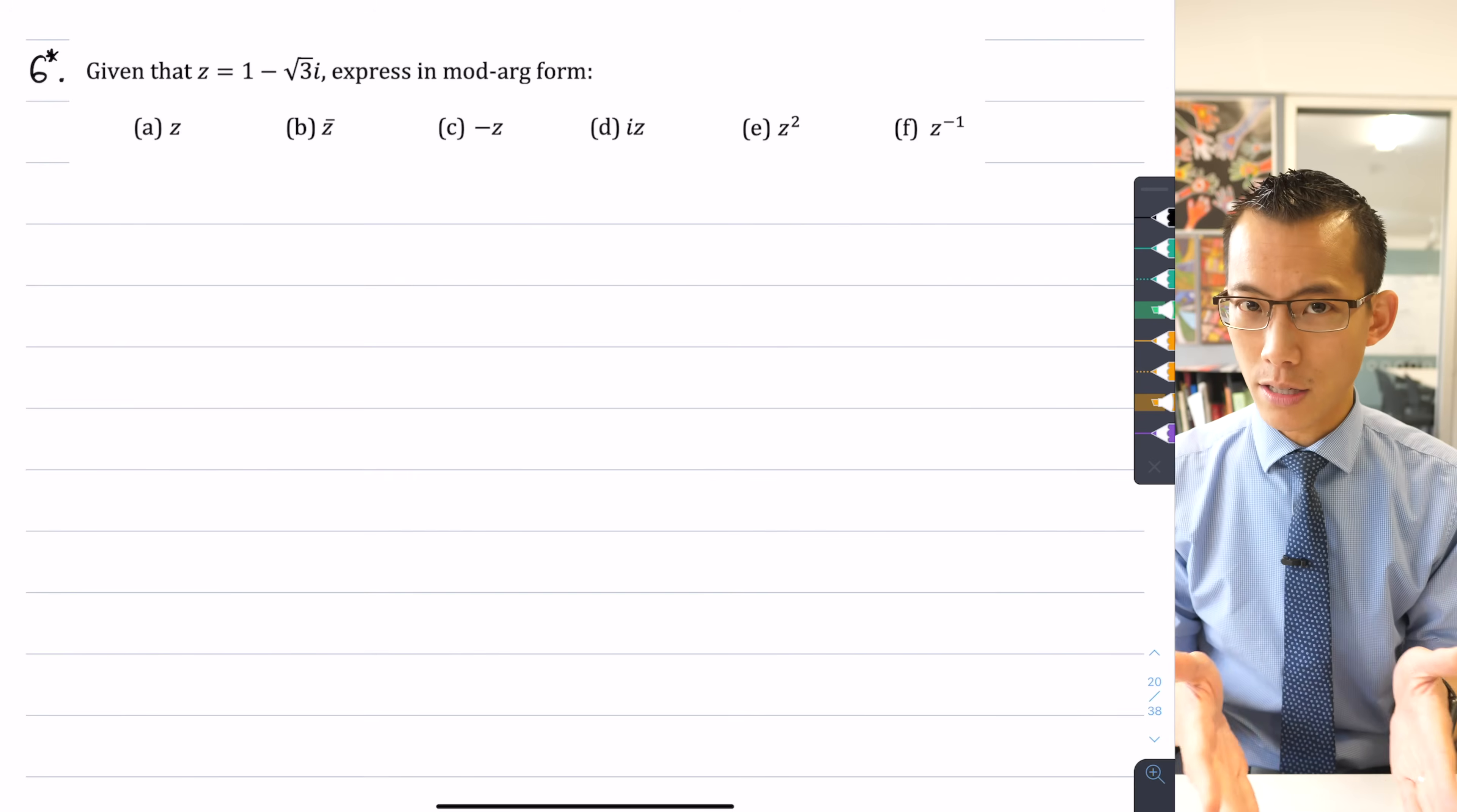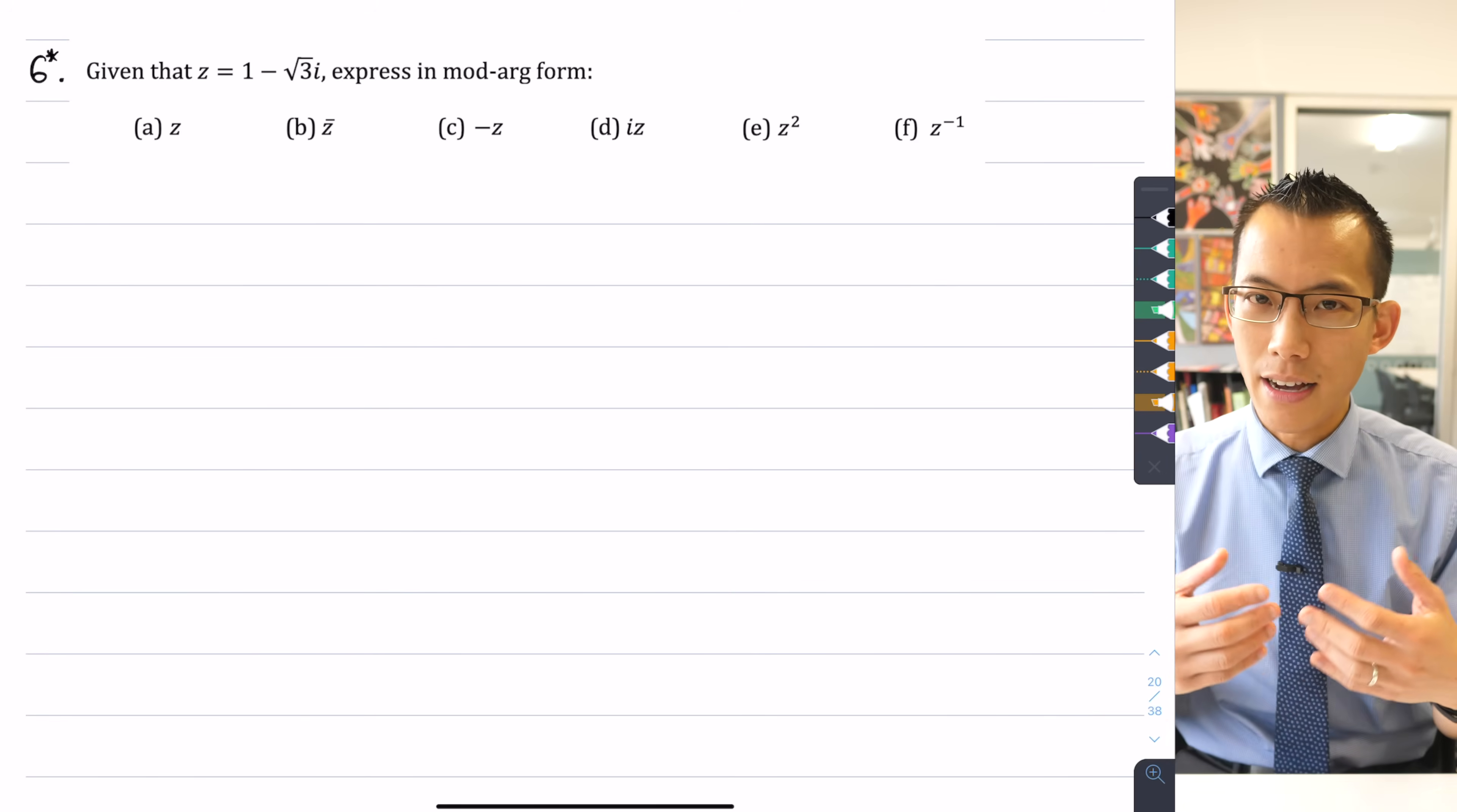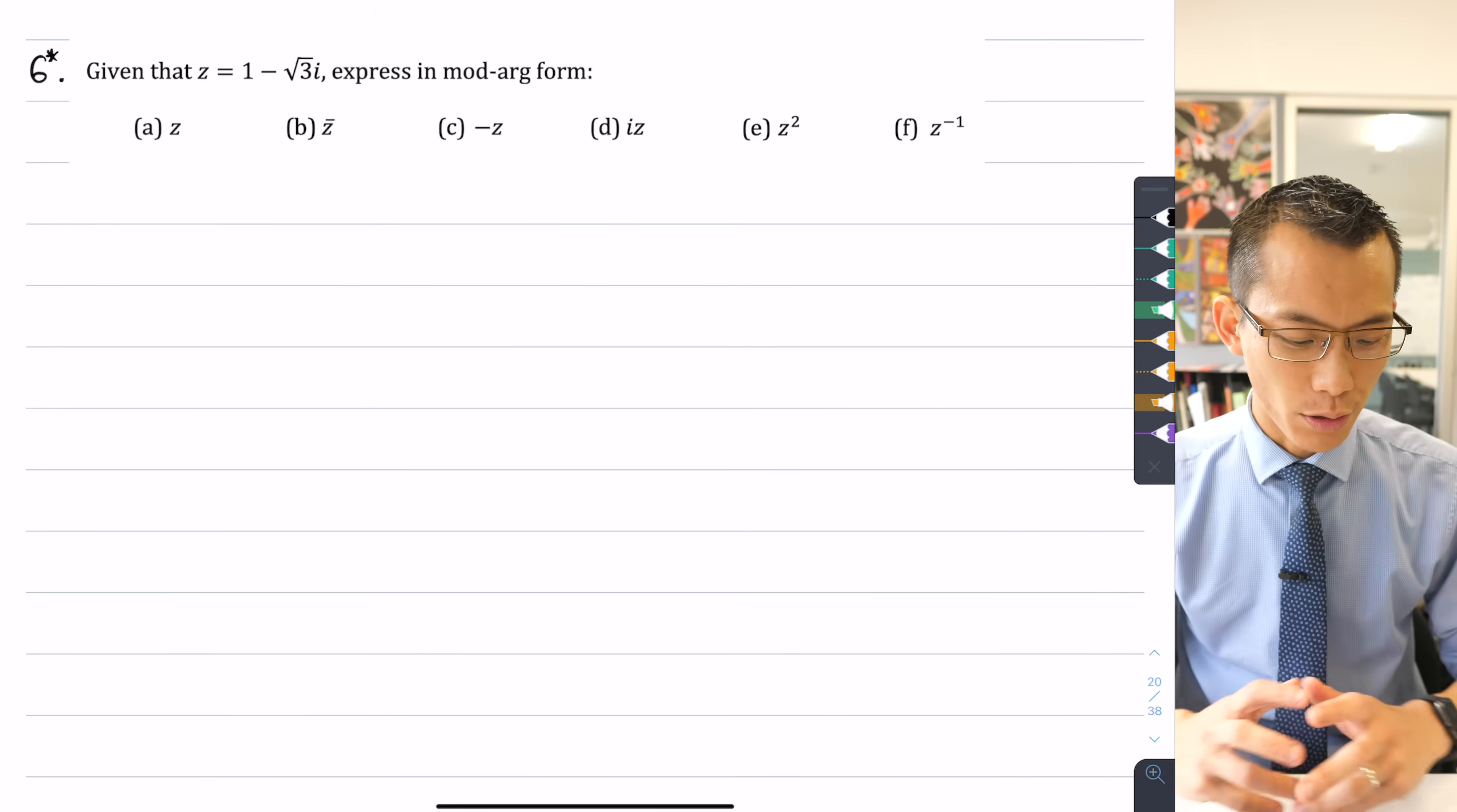So I'm not just going to go ahead and calculate the solutions here, I'm also going to try and unpack some generalizations of what these principles, z, z-bar, minus z, all those kinds of things mean in mod arg form, not just for this particular z, this particular complex number, but for complex numbers in general. So let's have a look at this.